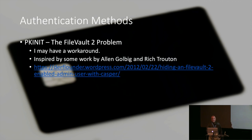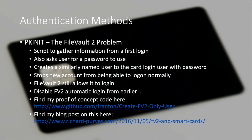I might have a workaround, inspired by Rich Trouton and Allan Odgaard. There was a blog post from 2012 called 'Hiding a FileVault-enabled User from Casper' that provided the genesis of a proof of concept script I've been working on. The concept: user logs in for the first time with their card, it grabs some information off the card, asks the user for a password, creates a similarly named account, prevents that new account from actually being able to log in, hides it, and adds it to the FileVault list. I have a blog post and a proof of concept bash script.